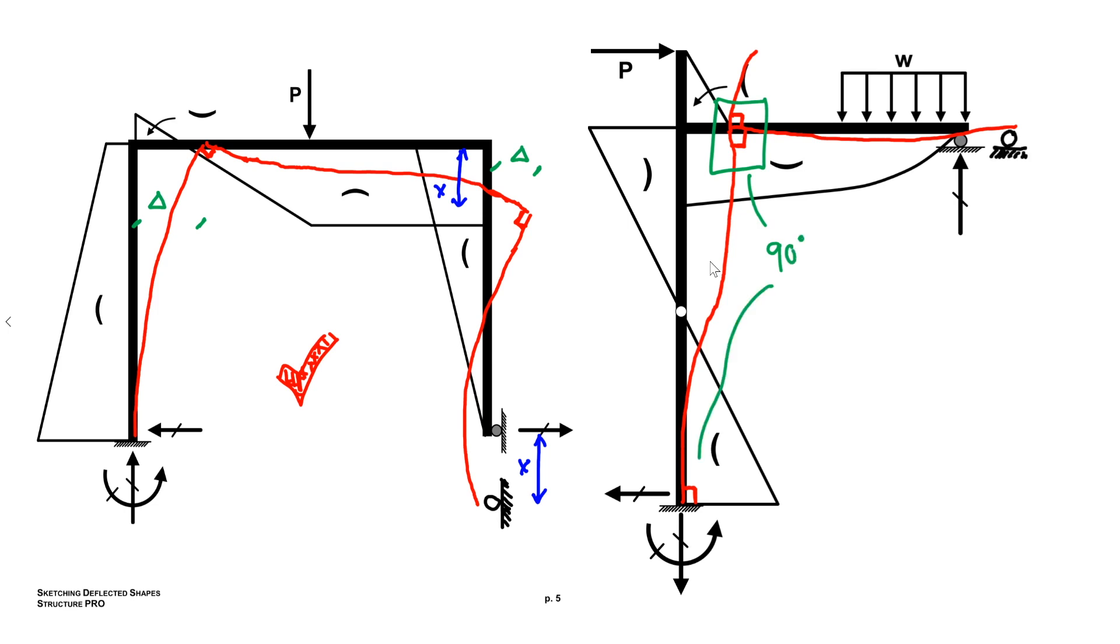Just to recap four basic rules right you gotta make sure that the moment diagram follows the curvature of your deflected shape then you got to make sure your boundary conditions are you're respecting them then you got to make sure your internal angles are unchanged and finally that your member lengths are unchanged and that's the one that most people get wrong or don't label properly so pay special attention to that one. Thanks for watching and we'll catch you next time.